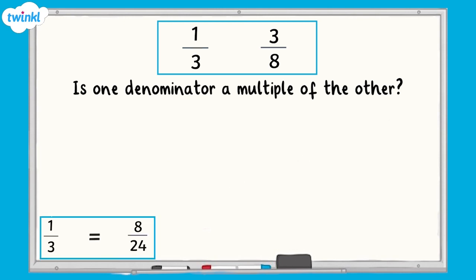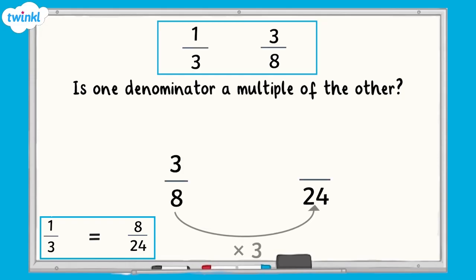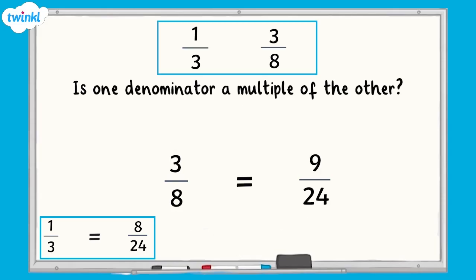Now let's do the same for 3 eighths. Applying the same rule to the numerator: 3 multiplied by 3 equals 9. We would say 3 eighths is equivalent to 9 24ths.